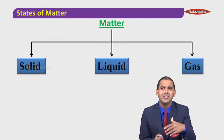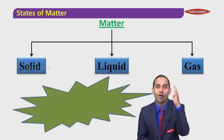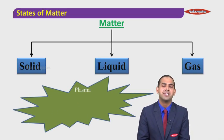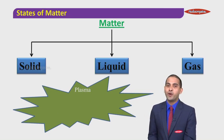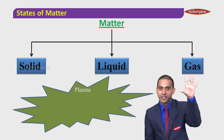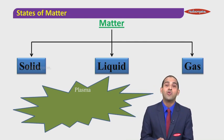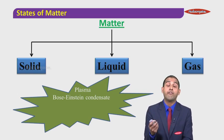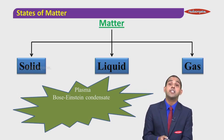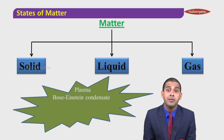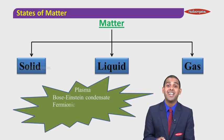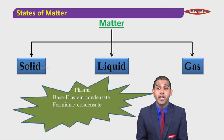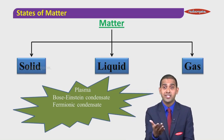When we say solid, liquid, and gas are the fundamental states of matter, do we have any other states? Yes — we have the fourth state, which we call plasma. We also have the fifth state, which we call Bose-Einstein condensate. And we also have the sixth state of matter, which we call fermionic condensate. So totally we have six states of matter.